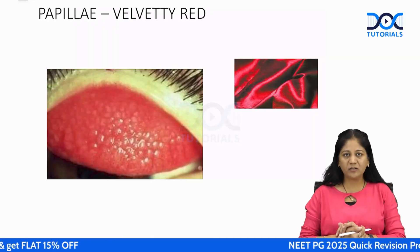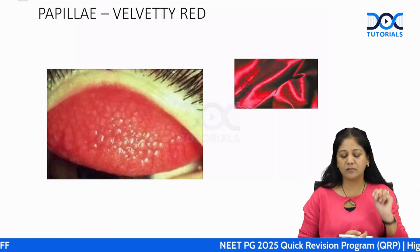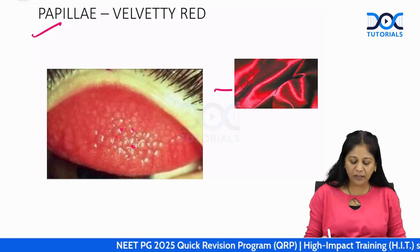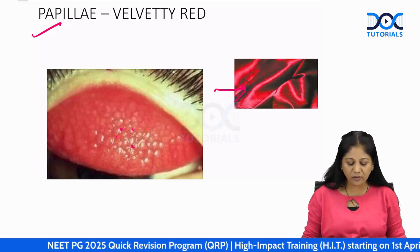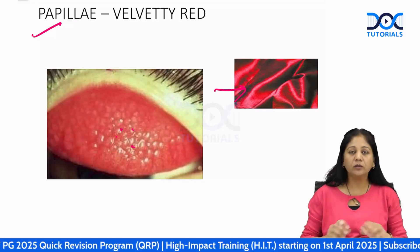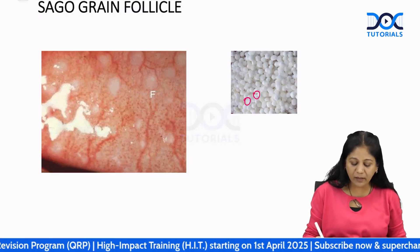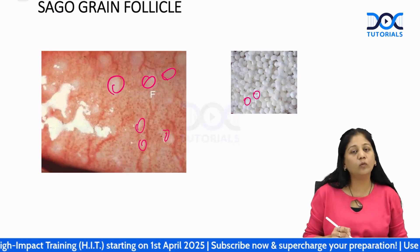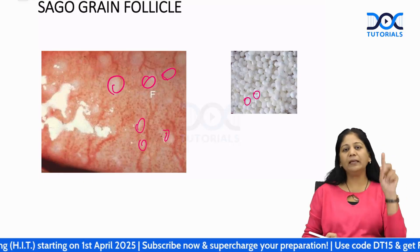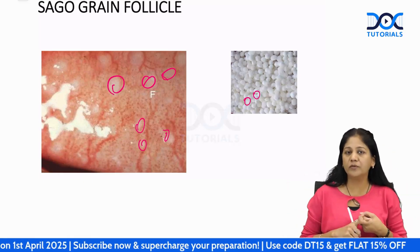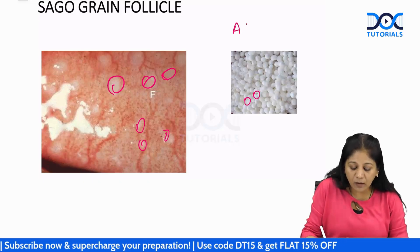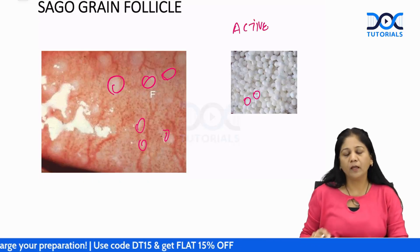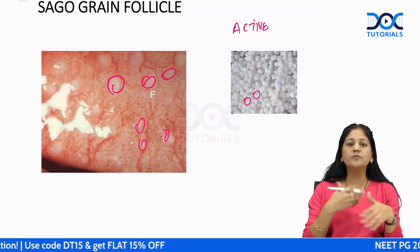Active inflammation can manifest as papillae — giving a velvety red appearance to the conjunctiva — or as follicles, which look like sago grains: white, round follicles. Papillae, follicles, or both are seen in the active stage of trachoma.